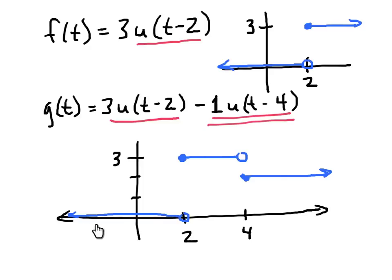It has value 0 until we get to 2, at which point this part of the function comes on, turns on to value 3 up here. And it stays that way until this other part then turns on at time 4 and drops the value down by 1 unit to a value of 2 from 4 on.